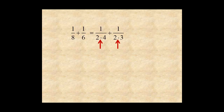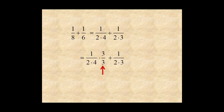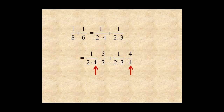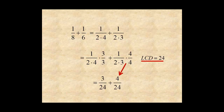To add these fractions, factor both denominators. Notice they have a common factor of 2. To add, the first term needs a factor of 3 and the second term needs a factor of 4. Now both denominators have a factor of 2 times 3 times 4, which is an LCD equal to 24. So the expression is 3 over 24 plus 4 over 24, and that's equal to 7 over 24.